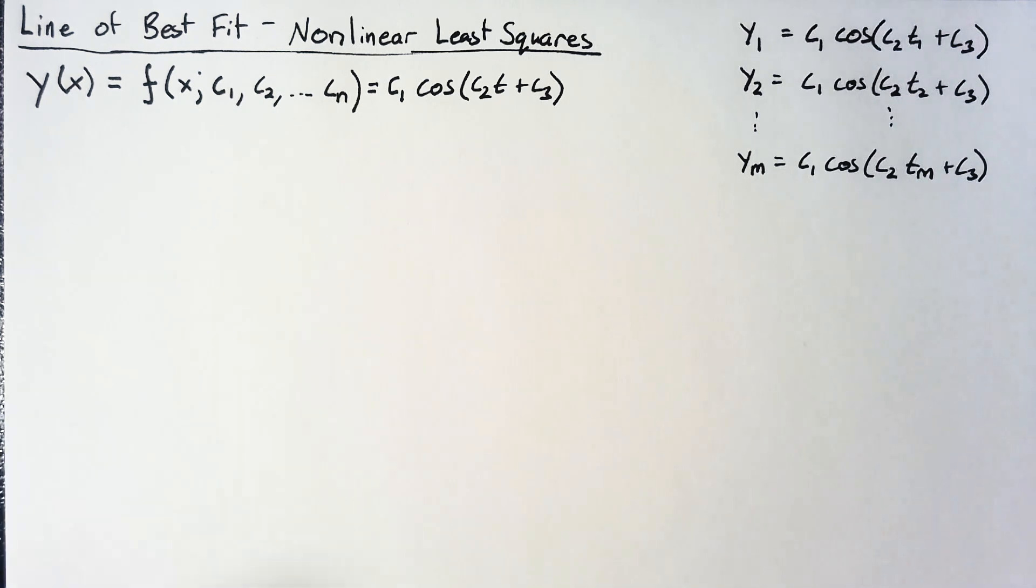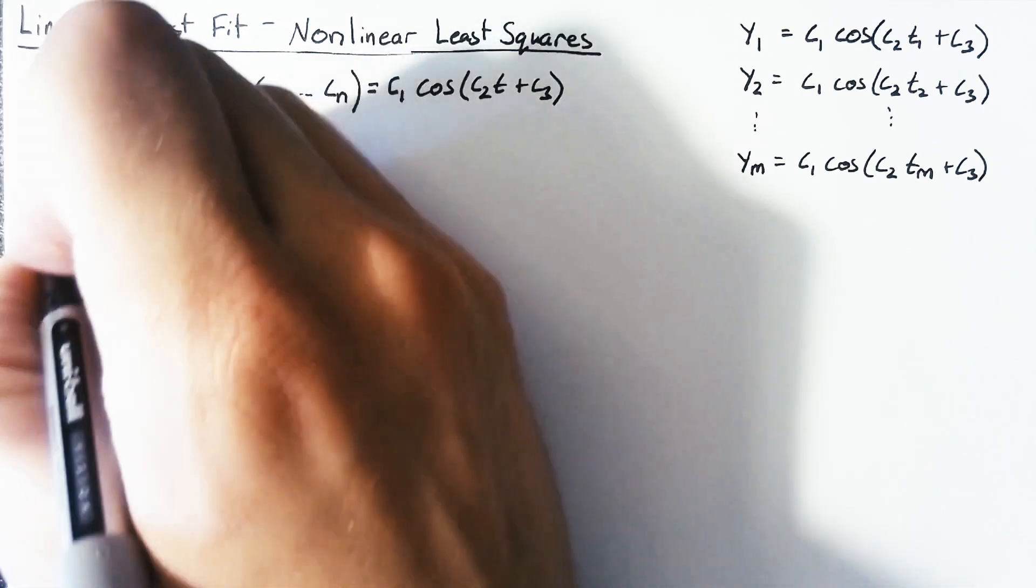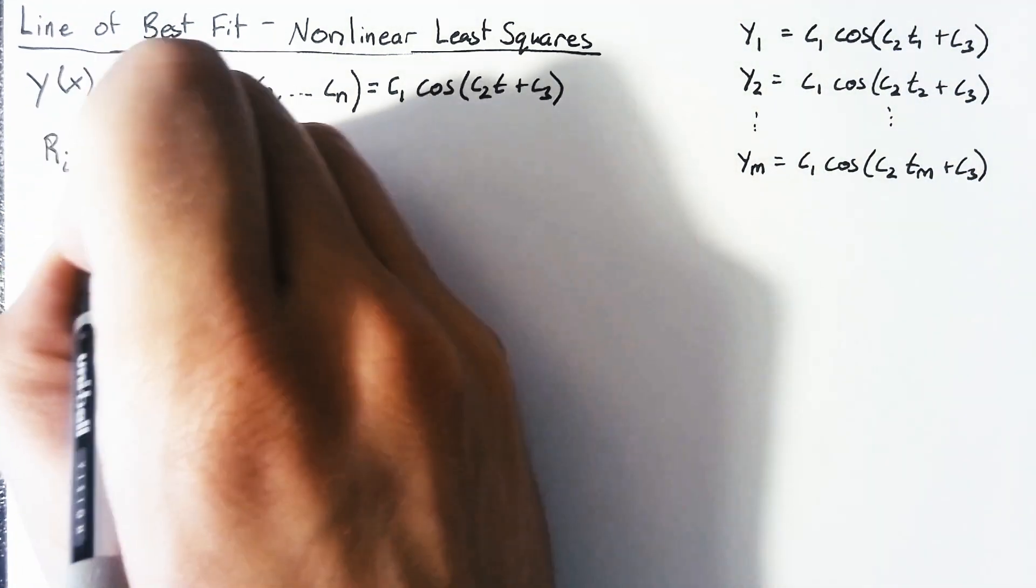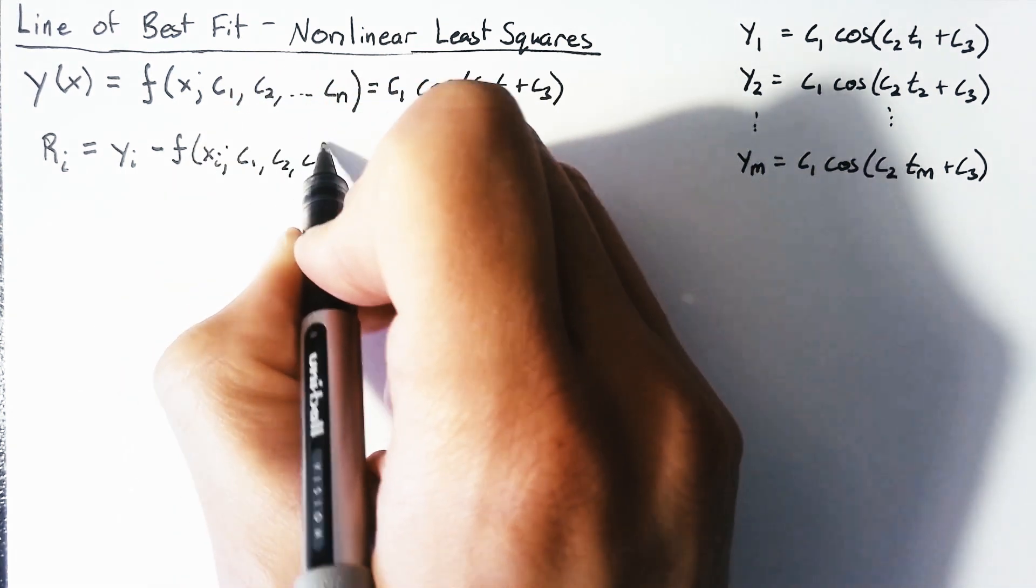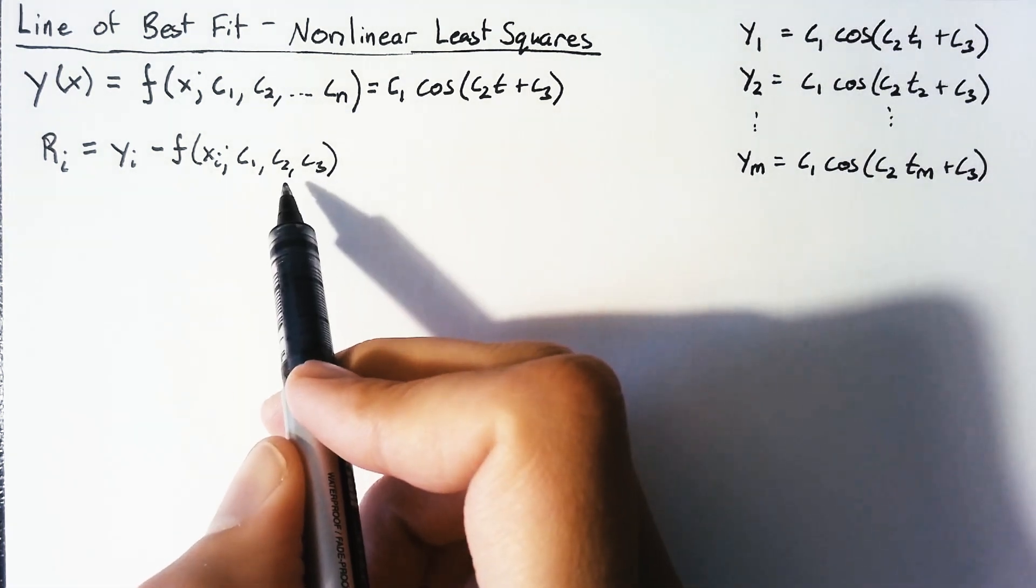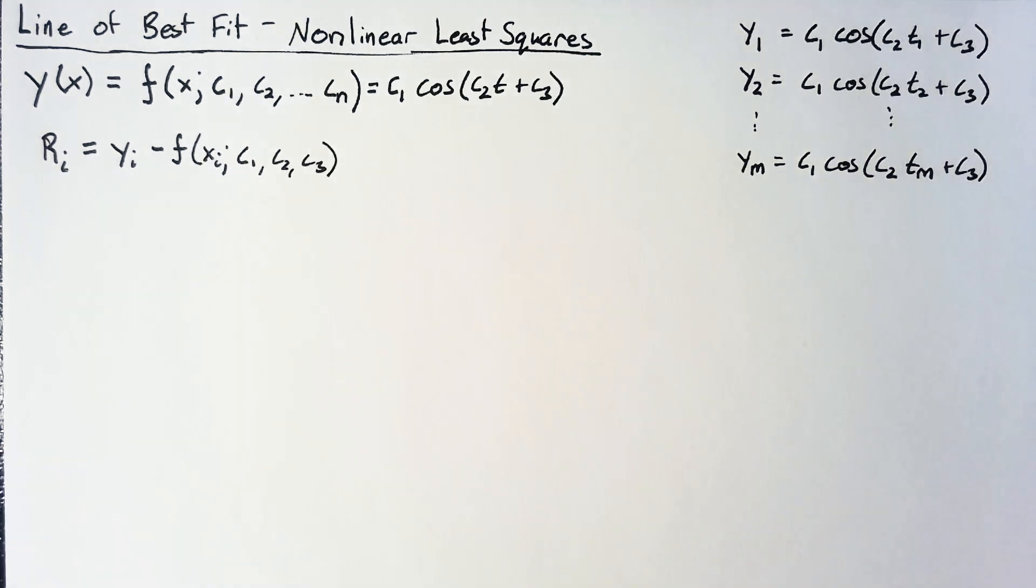Now, just like before, this function that we came up with is never going to perfectly match all of our data, unless we just happen to have exactly three points in this case. If our parameters match the number of points perfectly, then we can get a perfect solution. But in general, we have a lot more points than that. So for each of these points, we're going to have something called a residual, which I'm going to define as the actual data point minus the function that we come up with.